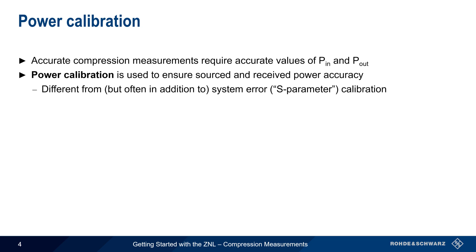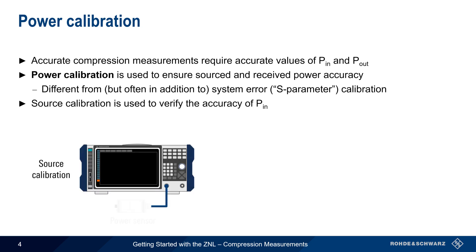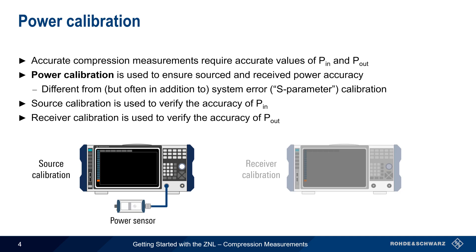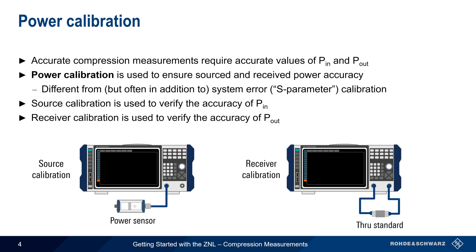There are two types of power calibration. The first is source calibration, which uses an external RF power sensor, or meter, to verify the accuracy of the source power. The second is receiver calibration, which is used to verify the accuracy of the measured power. We won't cover power calibration in this presentation, so please see the separate presentation on power calibration to learn more about this topic.